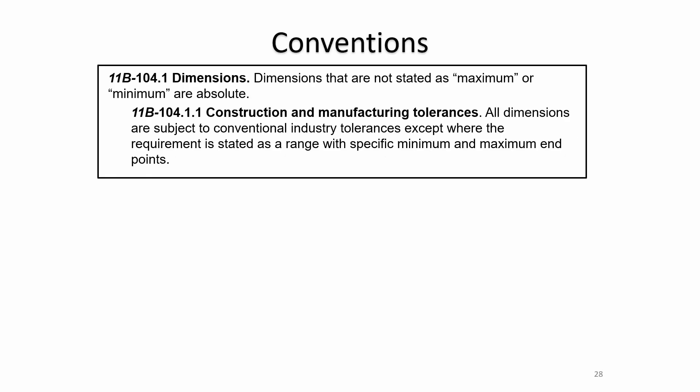Now moving forward to the accessibility content in Chapter 11B. The next section covers construction tolerances under 11B 104.1 — dimensions that are not stated as maximum or minimum are absolute. However, we don't actually have very many absolutes anymore in the code. Under 11B 104.1.1, construction and manufacturing tolerances apply.